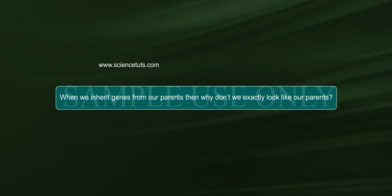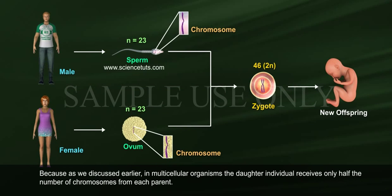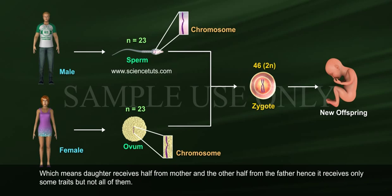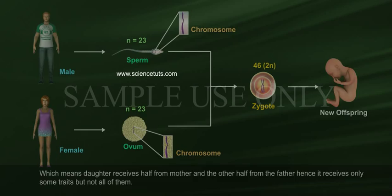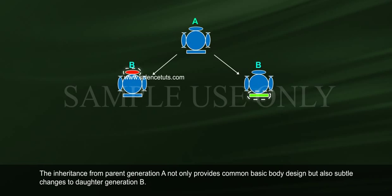When we inherit genes from our parents, then why don't we exactly look like our parents? Because, as we discussed earlier, in multicellular organisms the daughter individual receives only half the number of chromosomes from each parent — half from the mother and the other half from the father — hence it receives only some traits but not all of them. The inheritance from parent generation A not only provides a common basic body design but also subtle changes to daughter generation B.